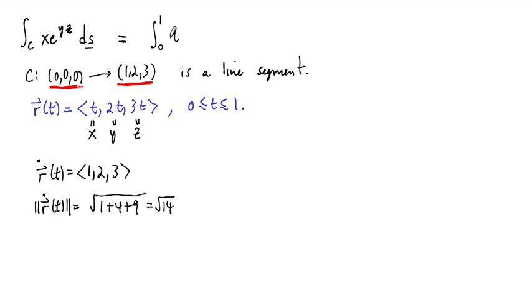x is equal to t. y times z is 6t squared, so this becomes e to the 6t squared. And then it's not just dt. I almost wrote down dt there. But it's the length of r-dot, so square root of 14 dt. And this is what we need to compute right here. This is our integral.